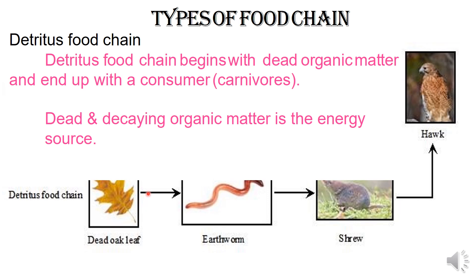Dead organic matter is consumed by the primary consumer. This is the primary source of energy. Next is the secondary consumer, which is a small carnivore. Then comes the top carnivore. This completes the indigenous food chain.